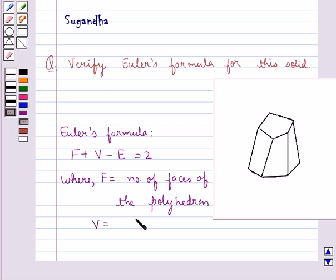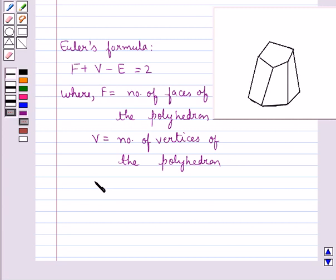V is the number of vertices of the polyhedron, and E is the number of edges of the polyhedron.